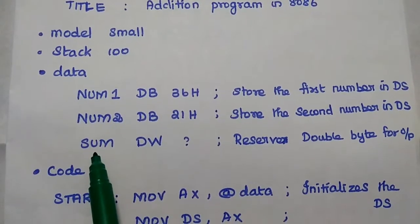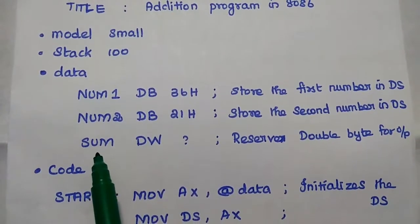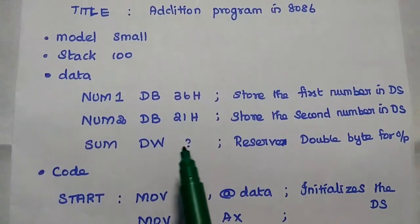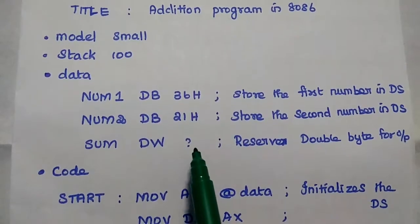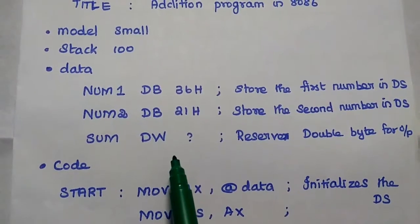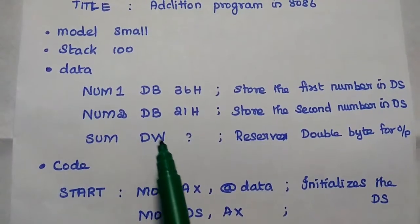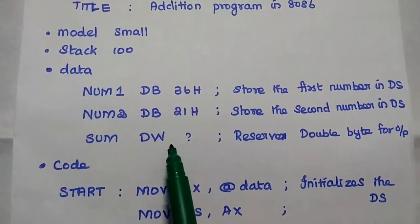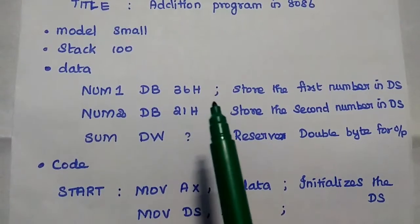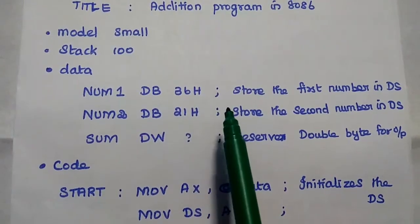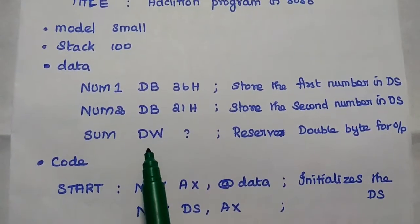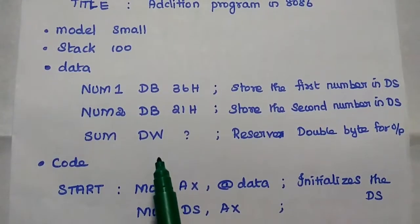There is one more variable called 'sum' — that is nothing but the output of the addition. We are going to reserve a memory location for this output. Here the data type is word, which means 2 bytes. If we are going to add two 8-bit values, the output may be 16-bit, which is why we reserve word type.